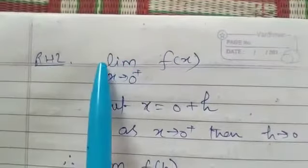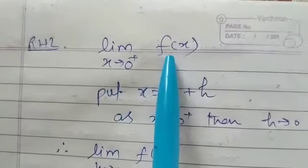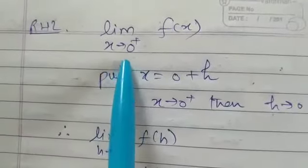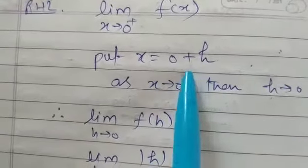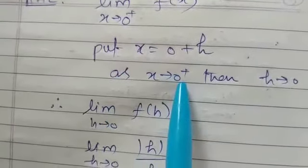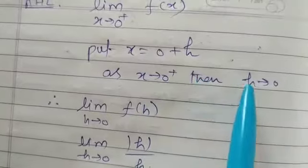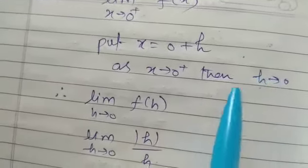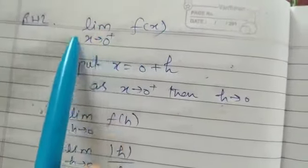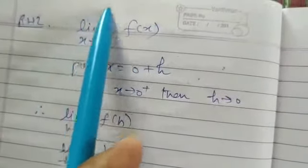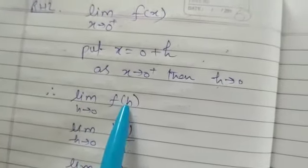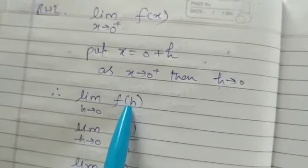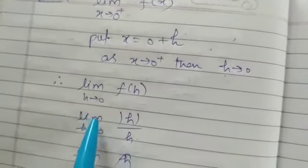RHL: limit x tends to 0 plus f(x). Now we have to make this limit as 0, so put x equal to 0 plus h. As x tend to 0 plus, then h definitely tends to 0. Now this whole function will convert it into limit h tend to 0, f(h). Now put x equal to h.